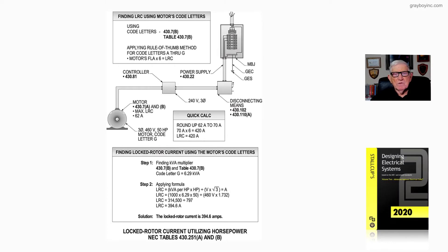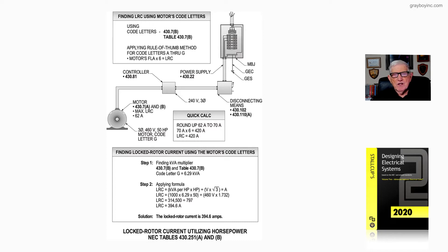This illustration deals with the procedure for determining the lock rotor current of a motor based upon its code letter. Section 430.7B refers the user to Table 430.7B. As you see in step one of this illustration, the example uses code letter G.